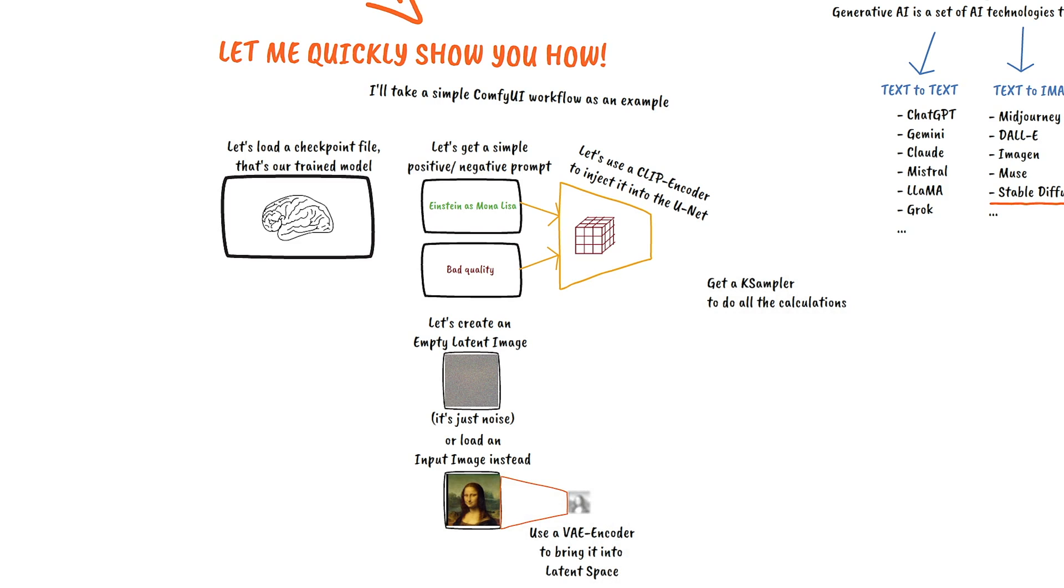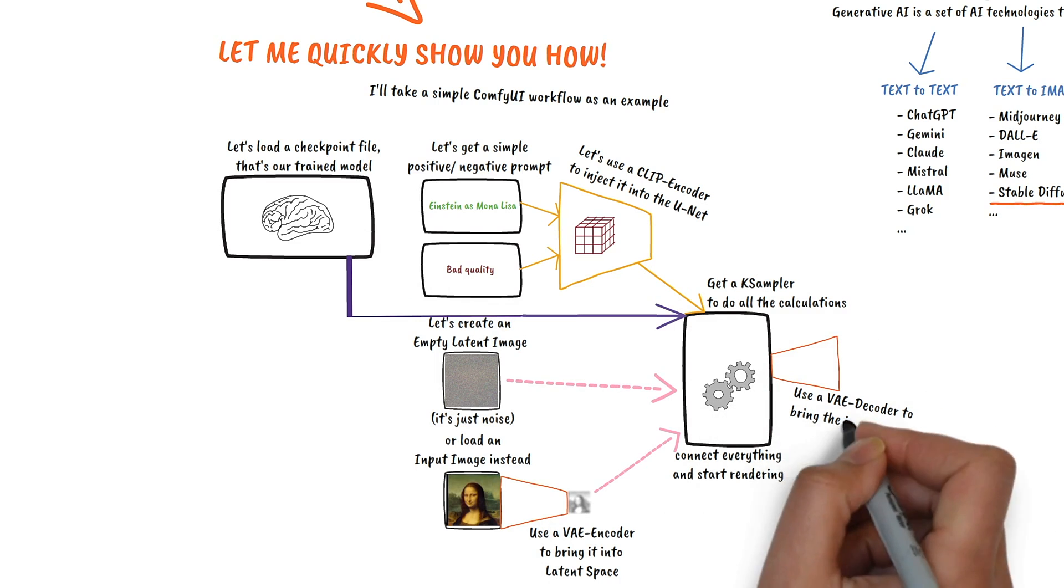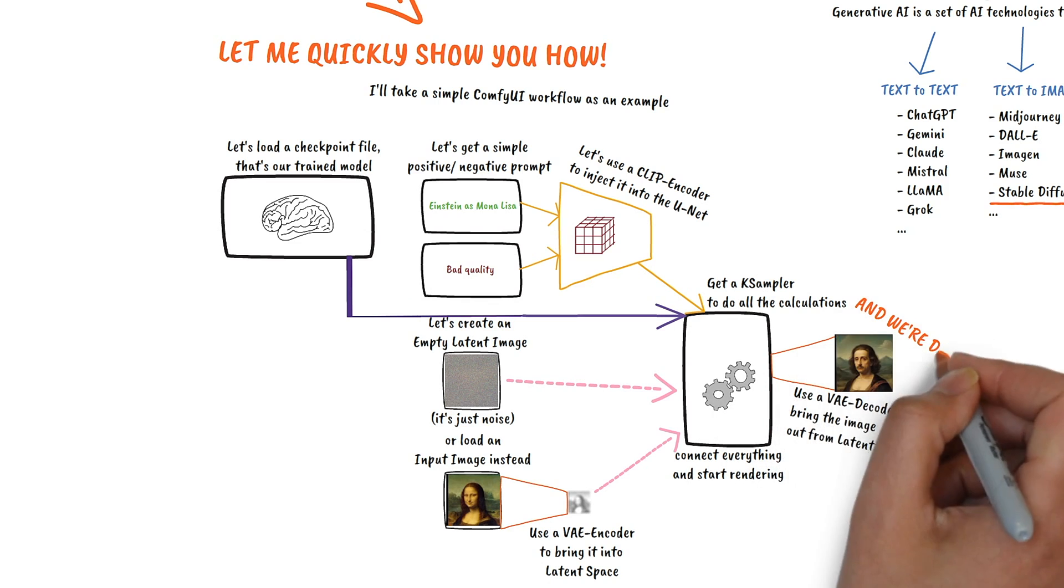Then we need a case sampler for the calculations. Then connect everything and render. Use a VAE decoder to get the image. And we're done.